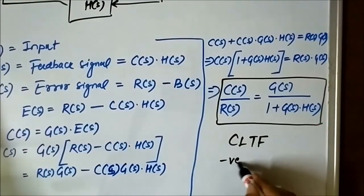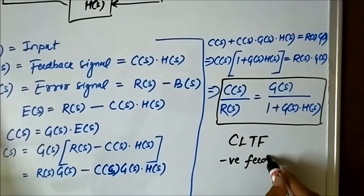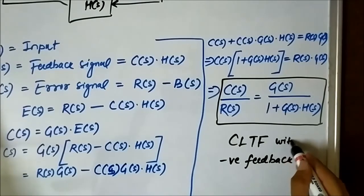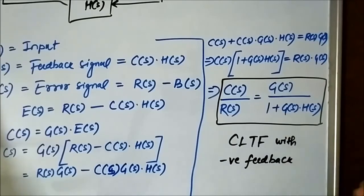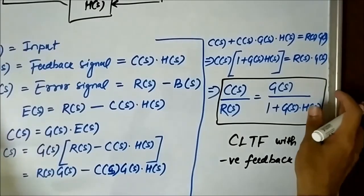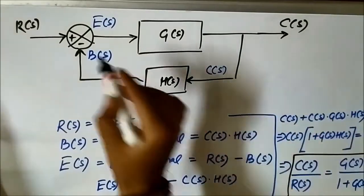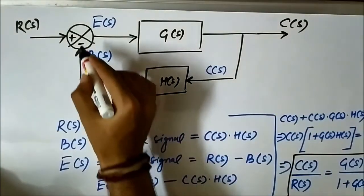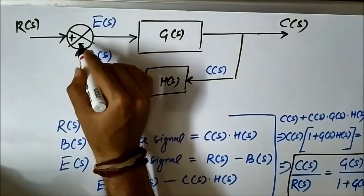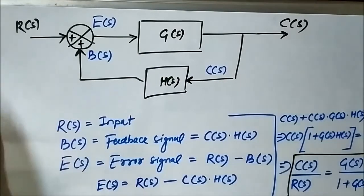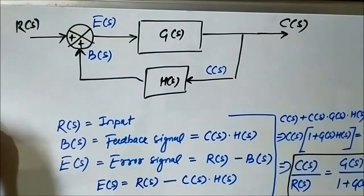This is the closed-loop transfer function with negative feedback. Now, if we consider positive feedback — that is, instead of a minus sign at the summing junction, we make it a plus sign — no major change is needed in the derivation.